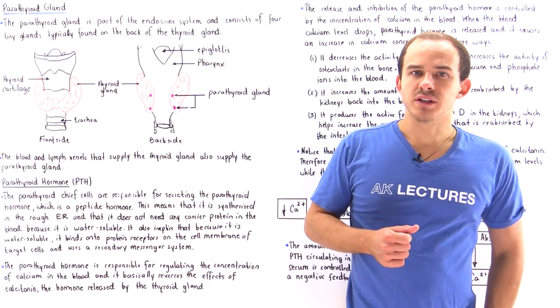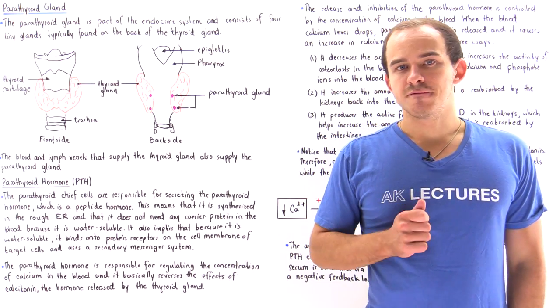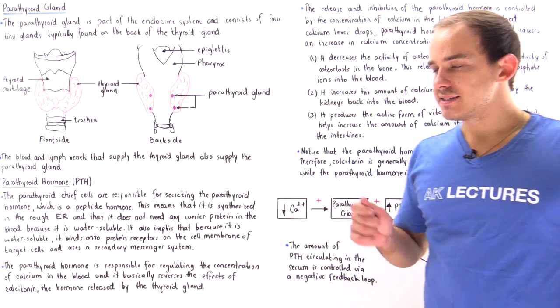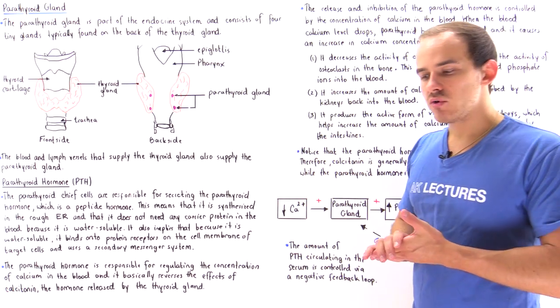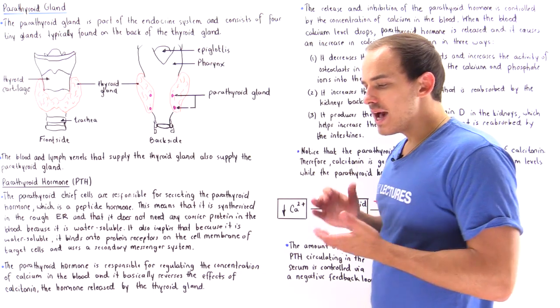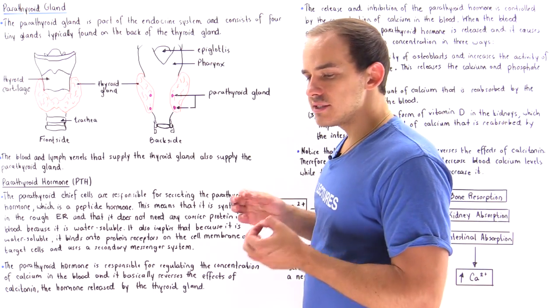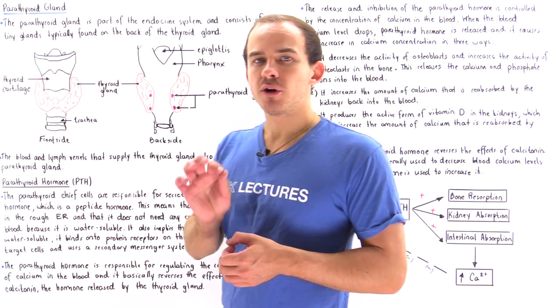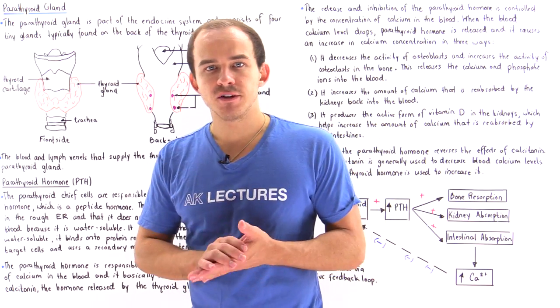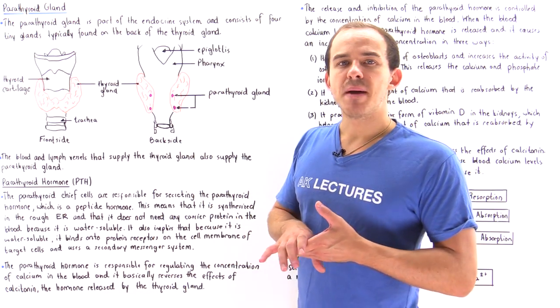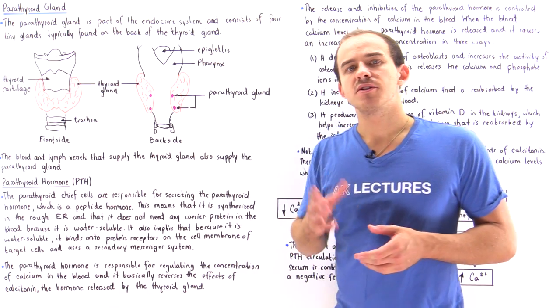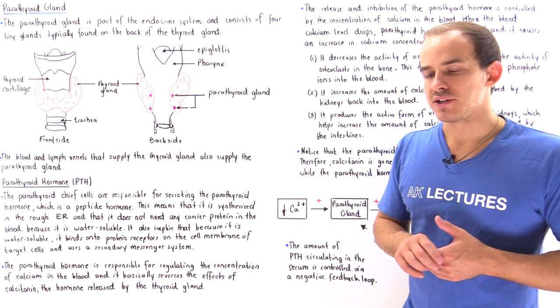The next endocrine gland that we're going to focus on is the parathyroid gland. The parathyroid gland consists of four tiny individual structures found on the backside of the thyroid gland.